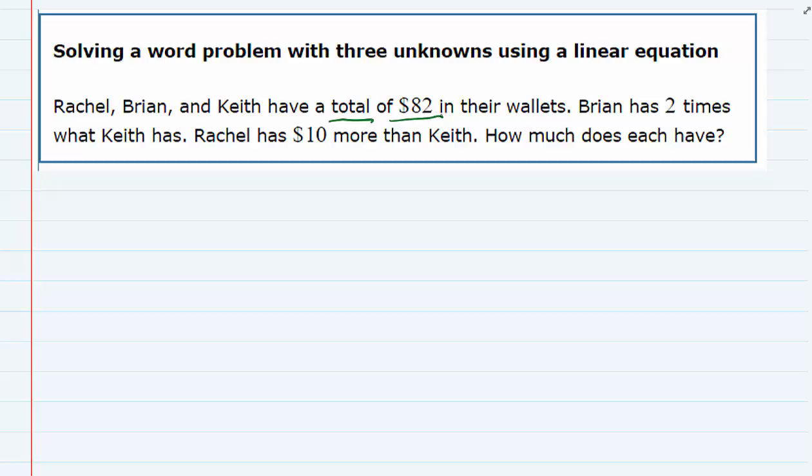We're dealing with three people here. I'm just going to write down their names. We notice that both Brian and Rachel are being compared back to Keith. So I'm going to call Keith's amount of money X, and that will let me write an expression for both Brian and Rachel.